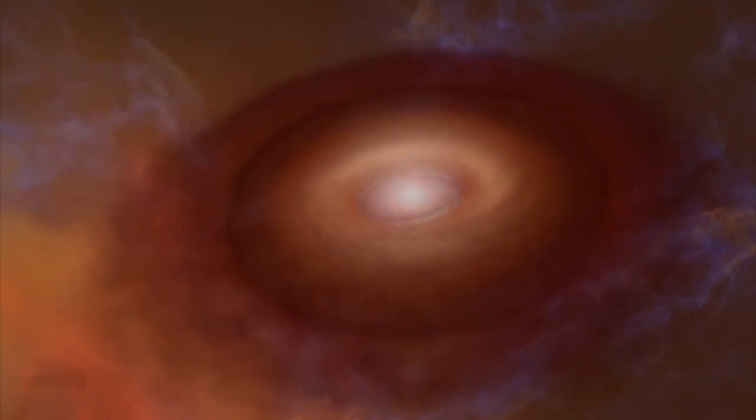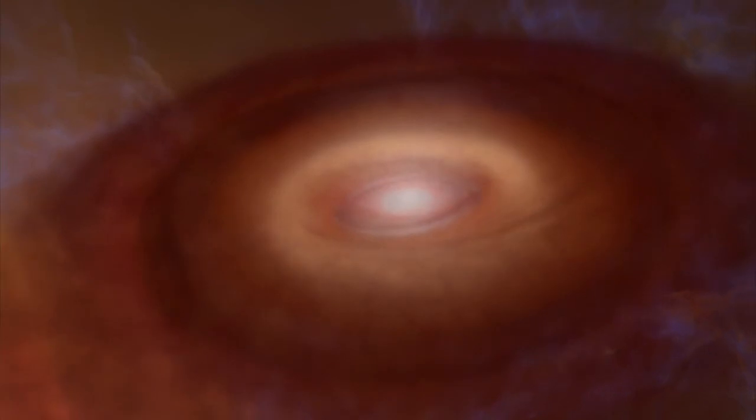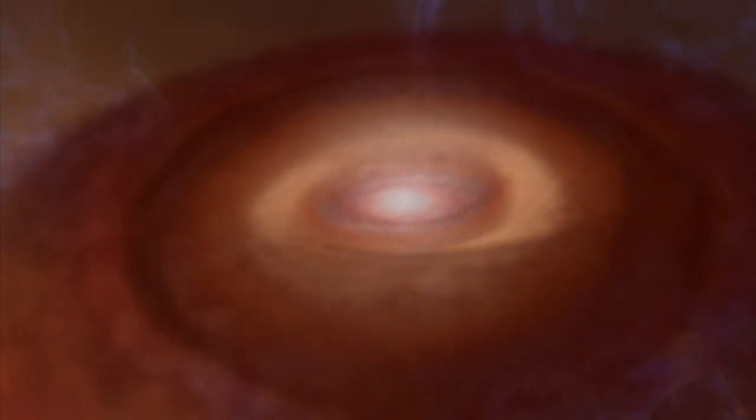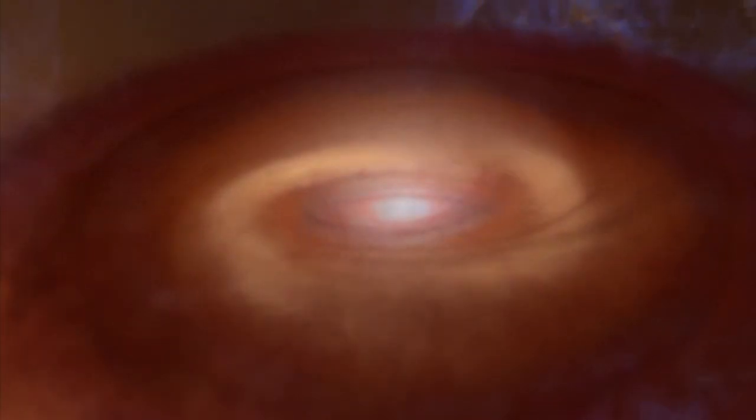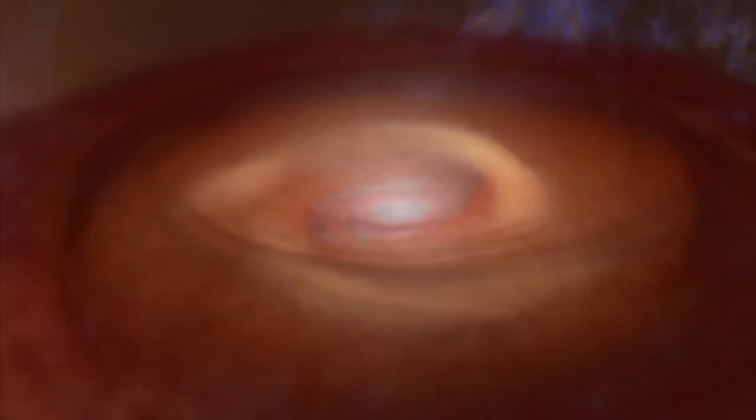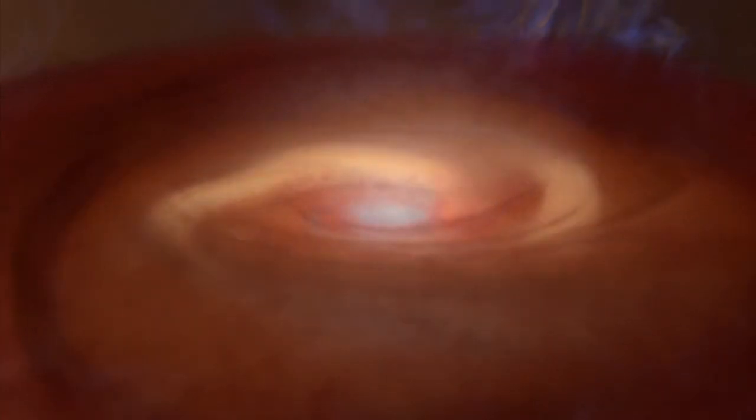Elsewhere in the cloud, another protostar is preparing to build planets. As the cloud that created the protostar collapsed, it flattened into a disk. The disk we see here is 600 times the size of Earth's orbit around the Sun. If placed in our solar system, it would extend far beyond the planets.